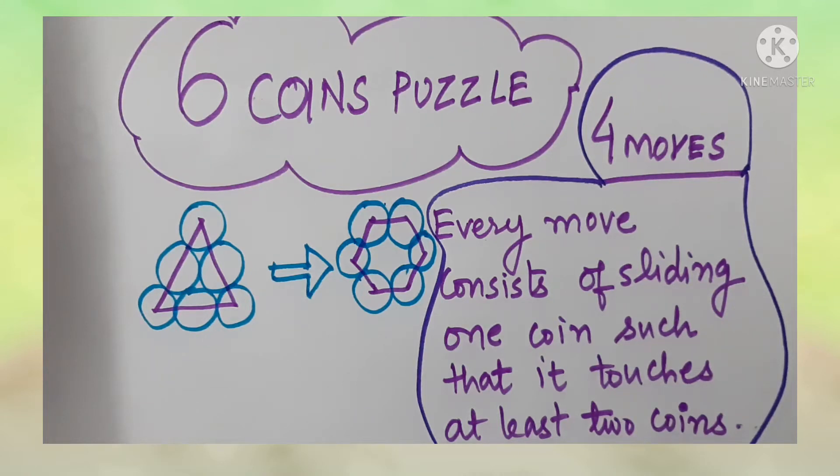Hello everyone, are you ready for today's puzzle? It's a famous six coins puzzle and you can see that six coins are arranged in the form of a triangle and we need to make a hexagon using four moves.